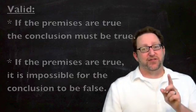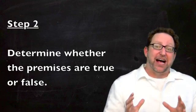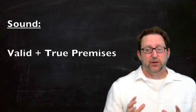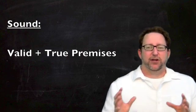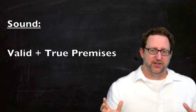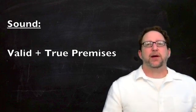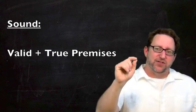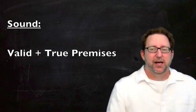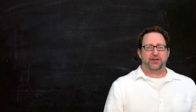Step one is to determine whether or not the argument is valid. Step two is to ask: are the premises true? If the premises of a valid argument are true, then the argument is sound, because a sound argument is just a valid argument with all true premises. So a sound argument is one that's valid — meaning the inferential claim is a good one — and has all true premises. With deductive arguments, our first question is whether it is valid, and then we ask whether the premises are true. If it's valid with true premises, the argument is sound — or we'd just say, it's a good one.